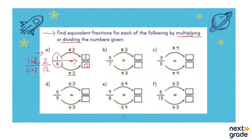Now we are going to look at another example in which we have to find the numerator and denominator. As rough work: 5 multiplied by 3 and 7 multiplied by 3, so the answer we get is 15 over 21. Let's write it in the box. That means 5 over 7 has an equivalent fraction of 15 over 21.